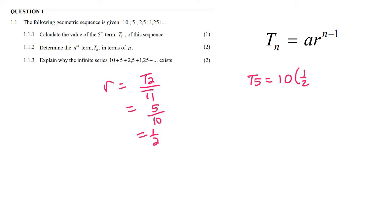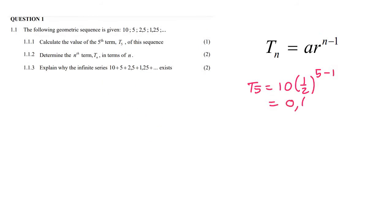So that's one half to the power of n, which is 5 minus 1. On the calculator, this gives us 0.625. That's the fifth term in the sequence.